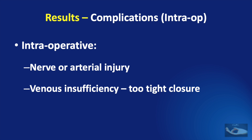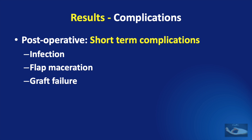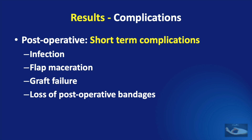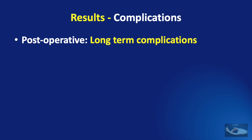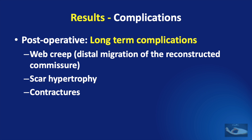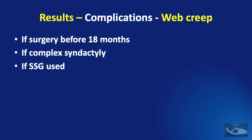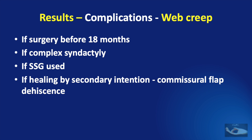Short-term postoperative complications include infection, flap maceration, graft failure, or loss of postoperative bandages in children if dressings have not been applied correctly. Long-term postoperative complications include web creep — which is distal migration of the reconstructed finger web commissure — scar hypertrophy, and contractures. Web creep is a very common complication. It usually occurs if surgery was done before 18 months of age, if it was a complex syndactyly, if split skin grafting was used instead of full thickness grafts, if healing was by secondary intention especially with commissural flap dehiscence, or if the natatory ligament was not divided.